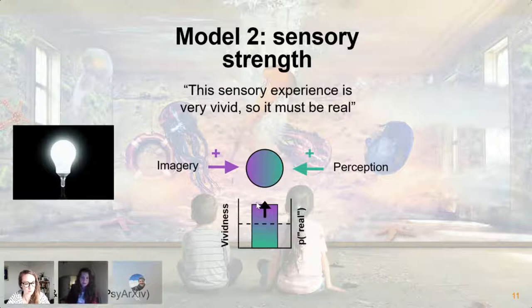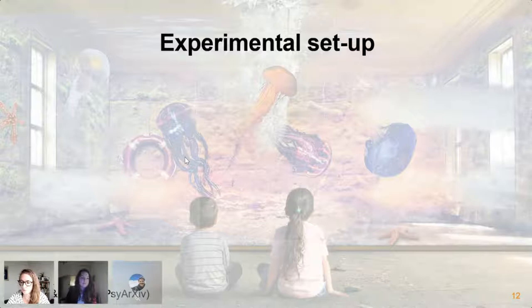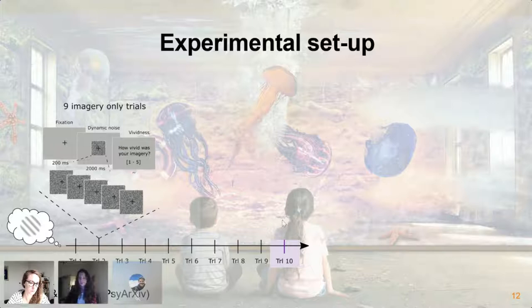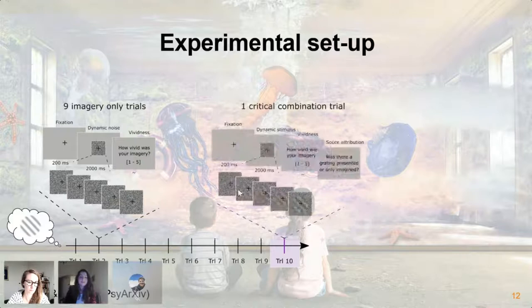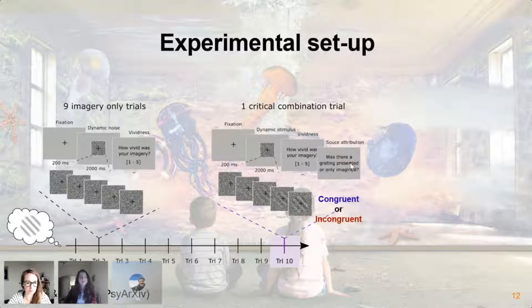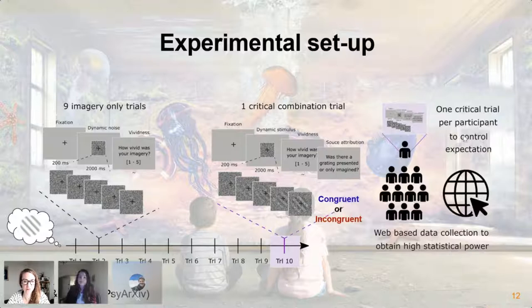We tested this using online psychophysics. The experimental design is inspired by the Perky effect: participants were instructed to imagine left- or right-tilted gratings while looking at dynamically changing noise, and then to rate their imagery vividness after each trial. On the tenth-to-last trial, unbeknownst to the participant, we presented a grating that was either congruent or incongruent to the one they were imagining. From the participant's perspective this last trial appeared the same as all others, but after it we asked whether a real stimulus had actually been presented. We used only one critical trial per participant so they could not build up any expectation, and used web-based data collection to get enough power.